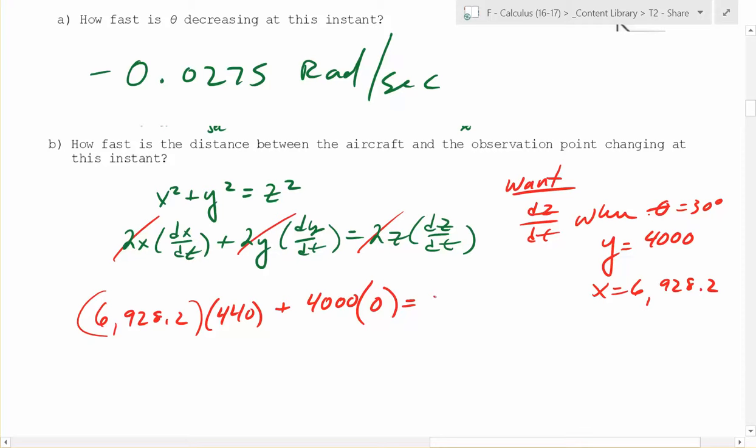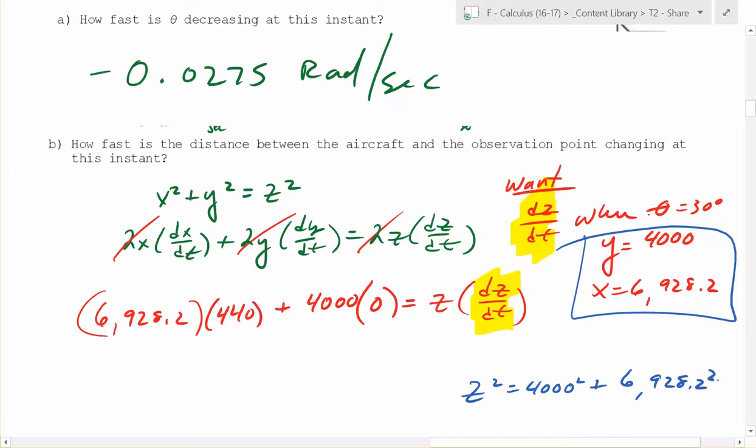And then z times dz dt, right? Which one did you want? Which one is the thing you want? Yeah, you can highlight it, so you get dz dt, right? So which one's the thing you need to find? Z. And you know that's at this instant, right? So you know that z squared is equal to 4,000 squared plus 6,928.2 squared.